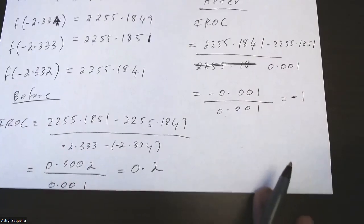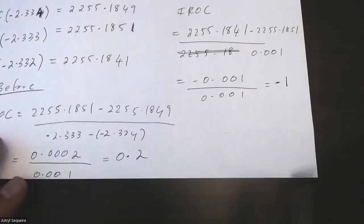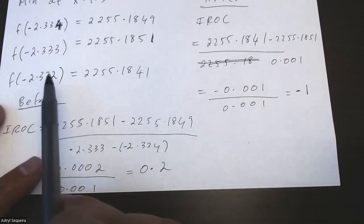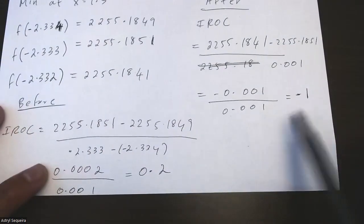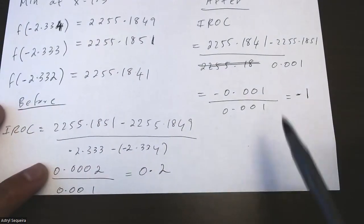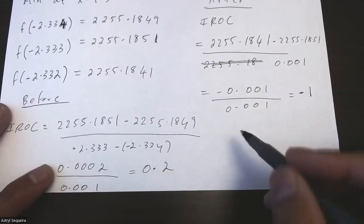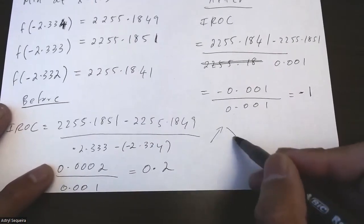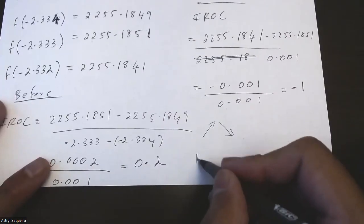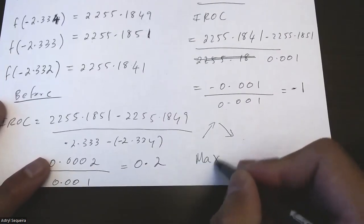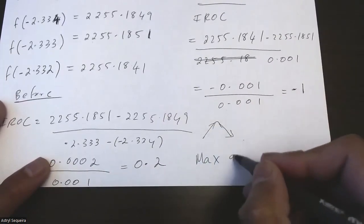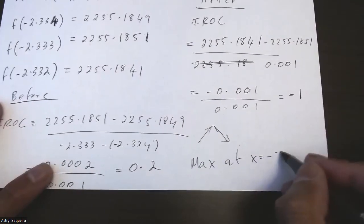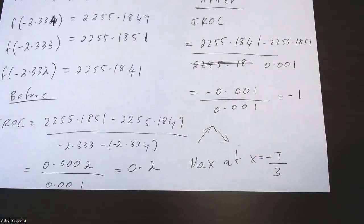The slopes don't match perfectly, and that's mainly because of rounding from using the decimal approximation. However, this is a perfectly acceptable calculation. If you use the exact value of negative 7 over 3, you would get the two slopes to be exactly the same. Since the slope before is positive and the slope after is negative, we have a maximum at x equals negative 7 over 3.